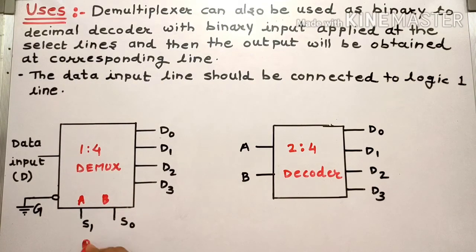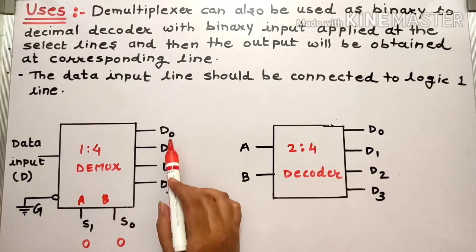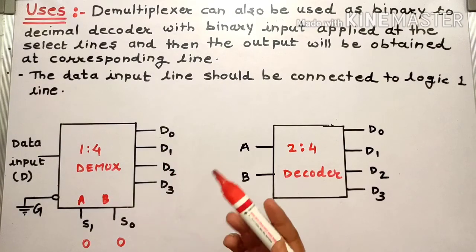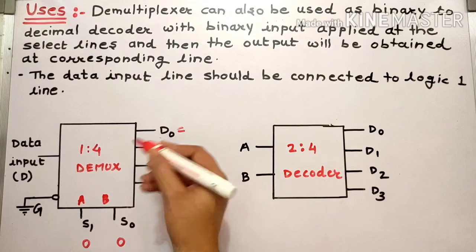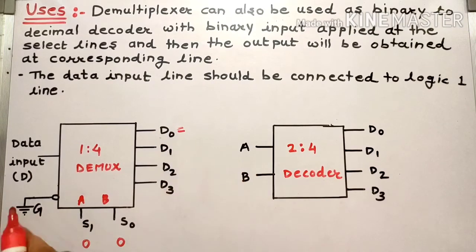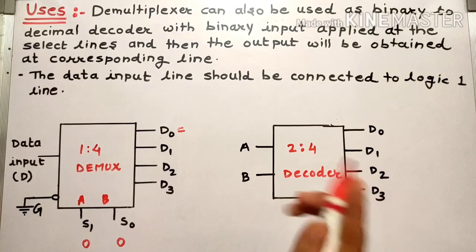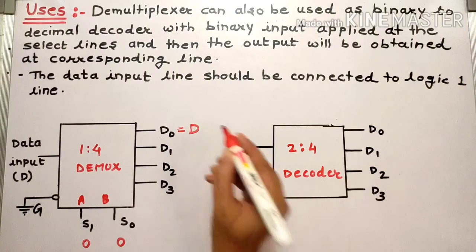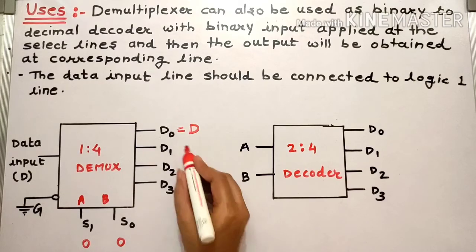When you apply 00 as the select input, the data input is transmitted to the respective output. When the 00 select line is passed, we get D0 — the data input D is routed to output D0.